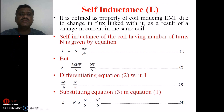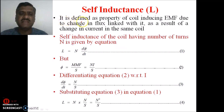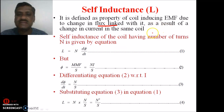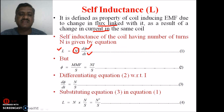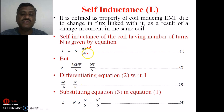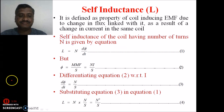Now we have two definitions: self-inductance and mutual inductance. Self-inductance is defined as a property of the coil inducing EMF due to change in the flux linked with it as a result of change in the current in the same coil, that is N·dΦ/di for N number of turns, which is its self-inductance L.